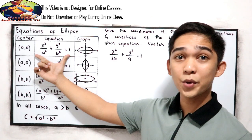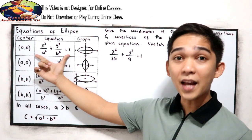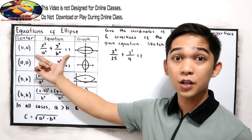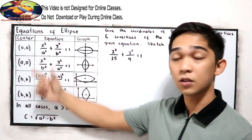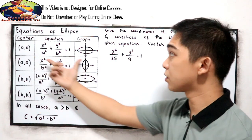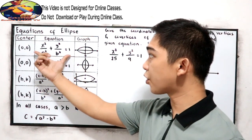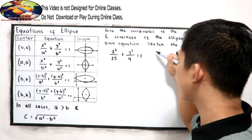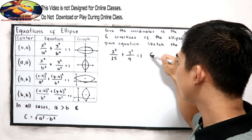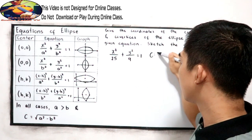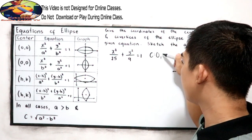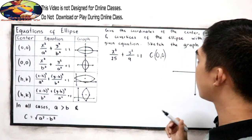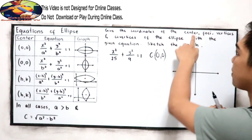We can easily find out the center of our equation. Since our form is in this case — center at the origin — our center is (0, 0).